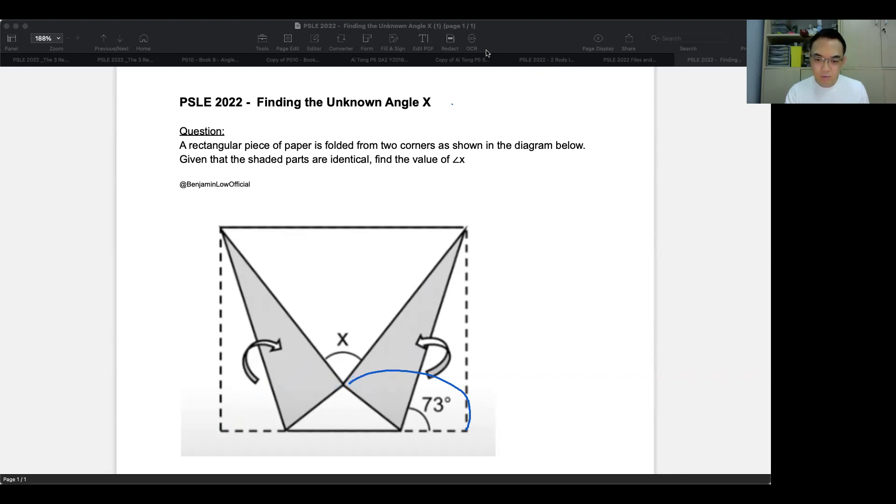Now, the corner of any square or rectangle is 90 degrees. So this corner over here we know is 90 degrees, right? Of course, that also applies to every other corner.